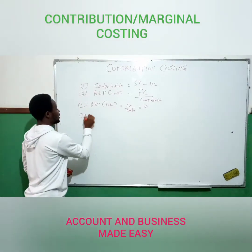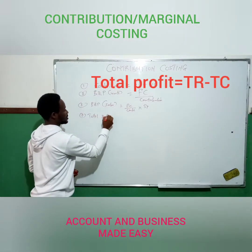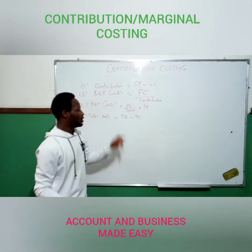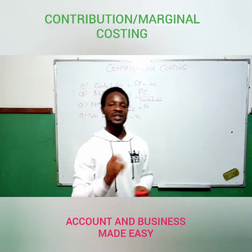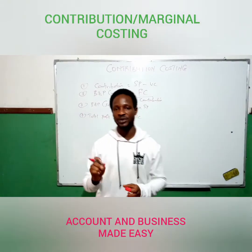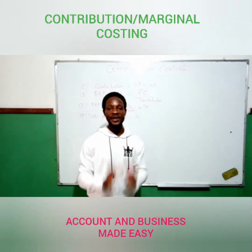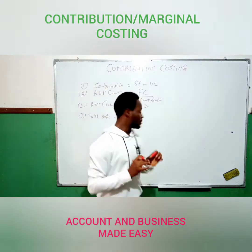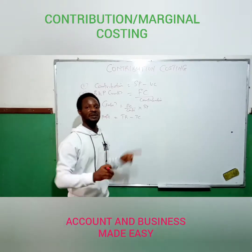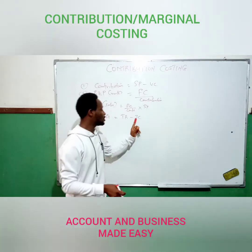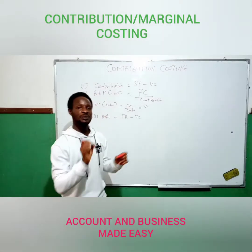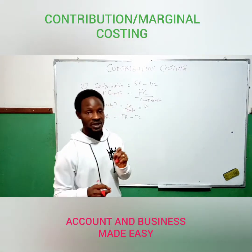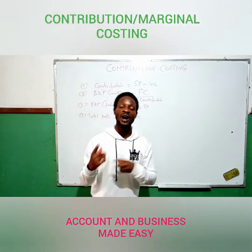Total profit is equal to total revenue minus total cost. Total revenue is selling price multiplied by output in sales. Total cost is fixed cost plus total variable cost, where total variable cost is variable cost per unit multiplied by output produced.